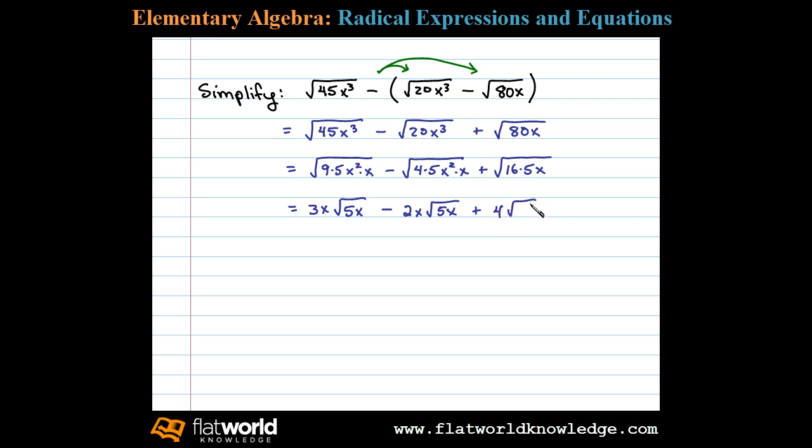At this point we combine like terms. Here I see 3x√5x minus 2x√5x. Since the variable part is exactly the same, these are like terms. Notice here the term 4√5x doesn't have a factor of x, therefore it's not similar.